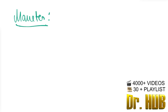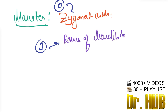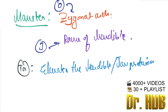Moving on to the masseter. The origin is from the zygomatic arch. The insertion is the ramus of the mandible. The function is that it elevates the mandible and there is jaw protrusion.